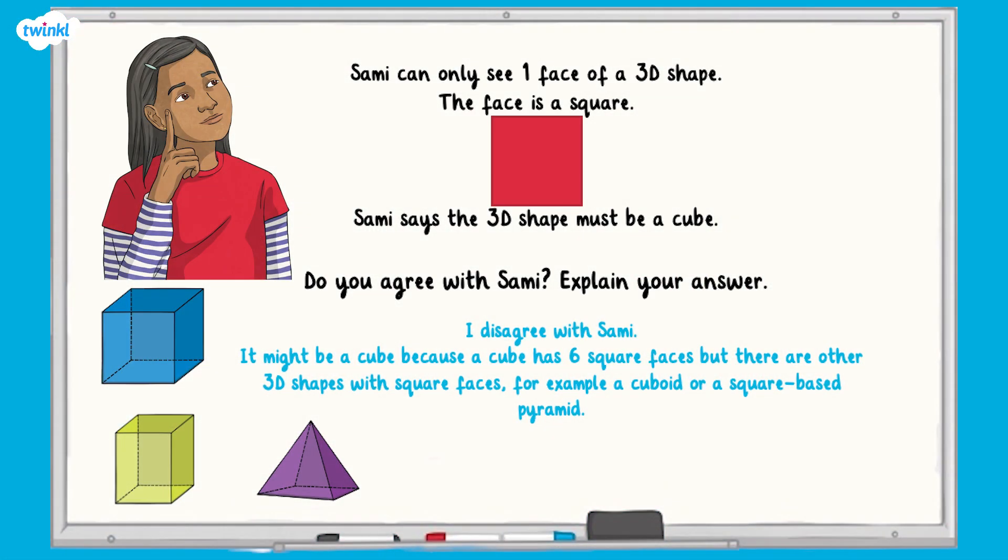How did you get on? Because Sammy says it must be a cube, we disagree with her. The 3D shape could be a cube, but it could also be any other 3D shape that has a square face. For example, it could be a cuboid or a square-based pyramid.